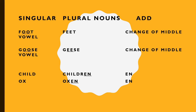Another way to change a singular noun into a plural noun is by adding 'en' to the end. For example, 'child' — we add 'en' to the back and it becomes 'children'. 'Ox' becomes 'oxen'. Is it clear?